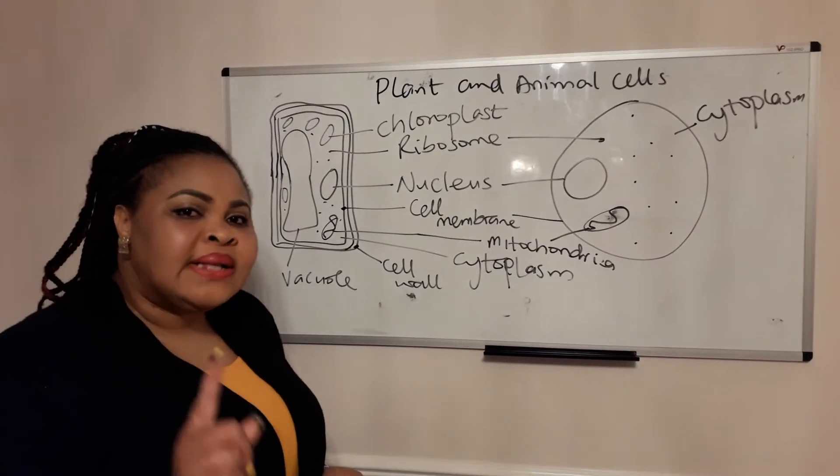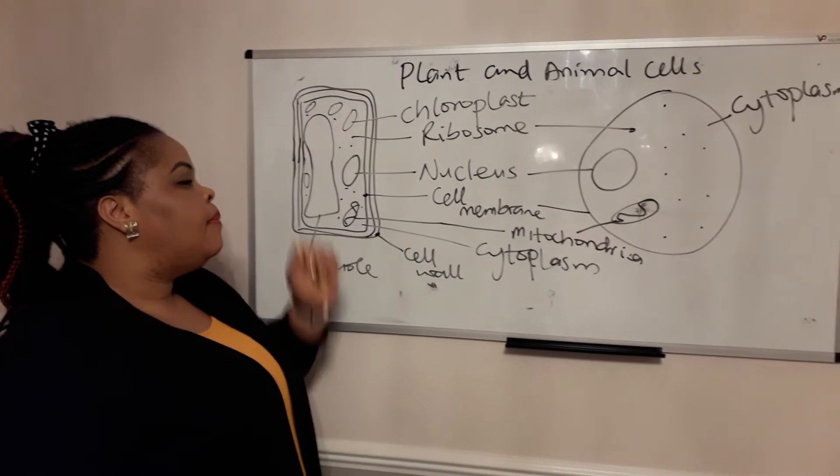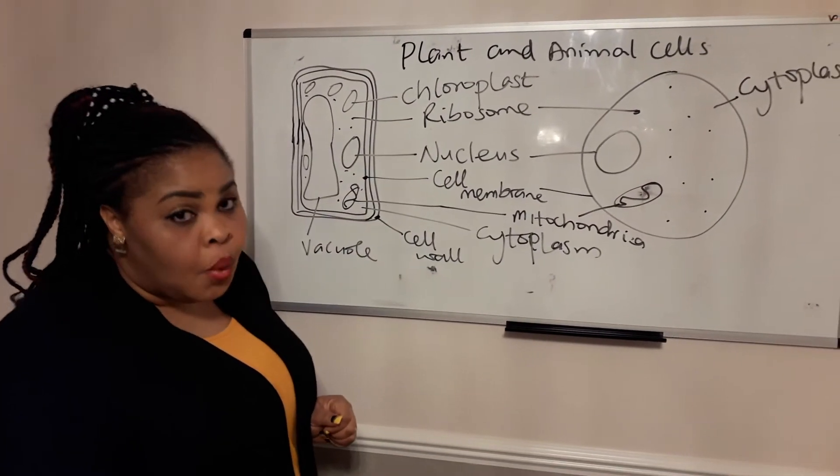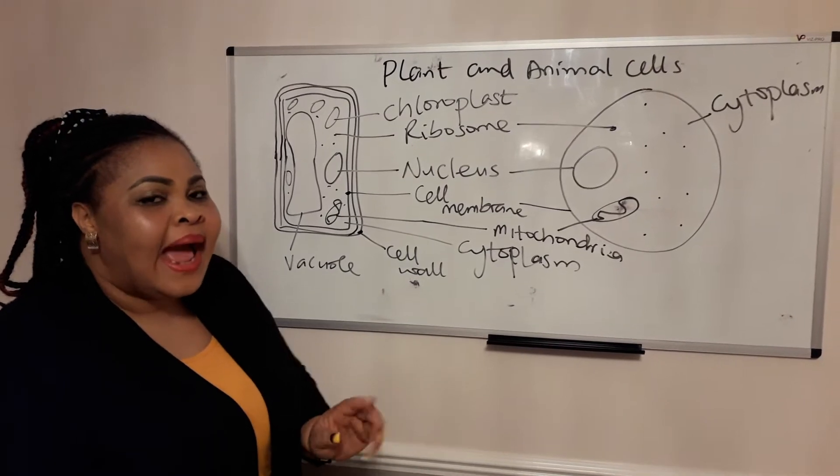But on the plant cell you've got the large vacuole, you've got chloroplast, and you've got the cell wall. These are not found in animal cells.